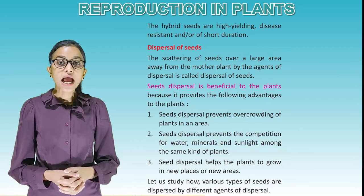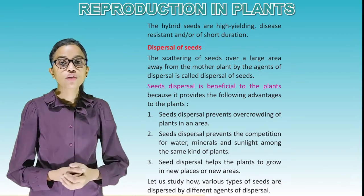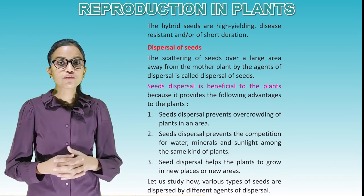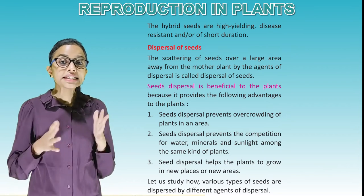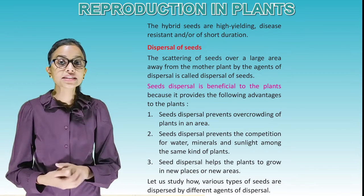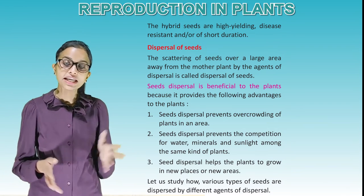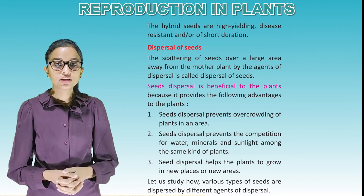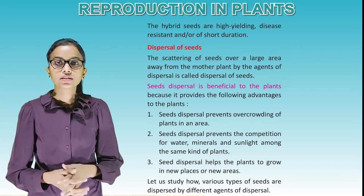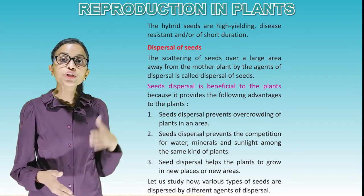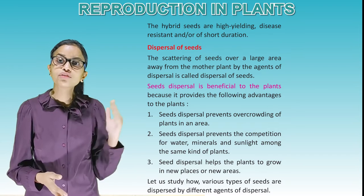The hybrid seeds are high-yielding, disease-resistant and of short duration. Dispersal of seeds: The scattering of seeds over a large area away from the mother plant by agents of dispersal is called seed dispersal. Seed dispersal is beneficial because it prevents overcrowding of plants in an area, prevents competition for water, minerals and sunlight among the same kind of plants, and helps plants grow in new places.